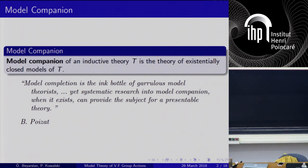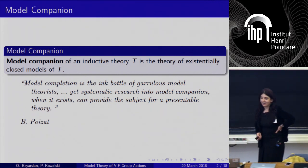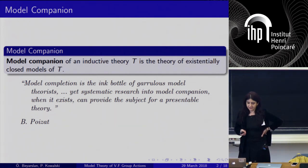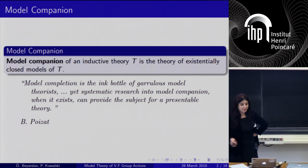I've heard that many people here talked about the history of model theory, in the sense of how model companion and model completion came up. The model companion of an inductive theory is the theory of existentially closed models. There's a quote from Bruno Poizat — it's a little bit controversial. He claims that model completion, the search for model completion, is the ink bottle of the gorillas — model theorists. But he adds that the systematic research into model companion, when it exists, provides the subject with a presentable theory.